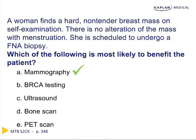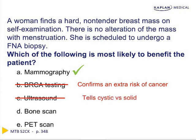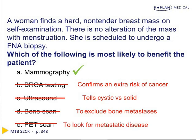BRCA testing is incorrect because knowing a positive BRCA mutation doesn't give additional information on how to treat the current cancer. Ultrasound is not important once a mass is suspicious for cancer since it only tells us whether the mass is cystic or solid, and the physical exam already gave us that information. Bone scan gives information on whether metastasis is present in bones, and PET scan tells us about suspicious lesions in lymph nodes or other body parts — neither is appropriate at this initial workup stage.